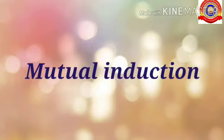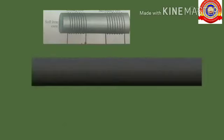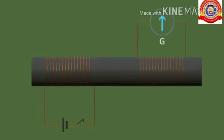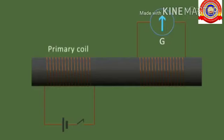Mutual induction. Here you can see a few turns of finely insulated copper wire are wound at each end of a soft iron core. The ends of one of the insulated copper wires are connected to a cell and a switch. The insulated copper wire wound on the other end of the soft iron rod is connected to a galvanometer. The first set of coil is called the primary coil and the second set of coil on the other end is called the secondary coil.